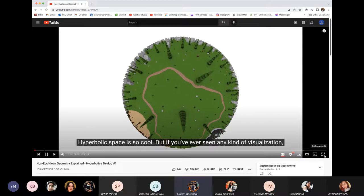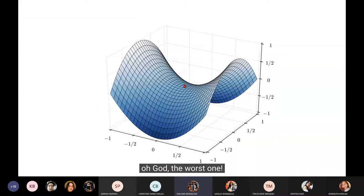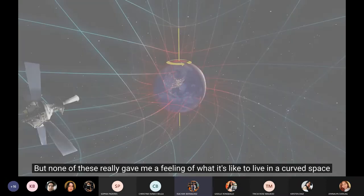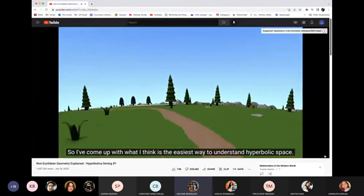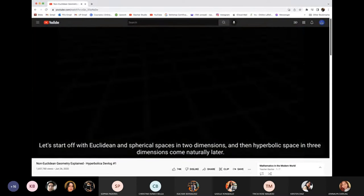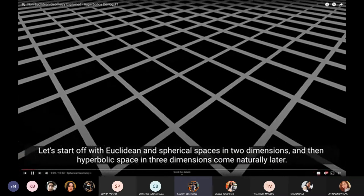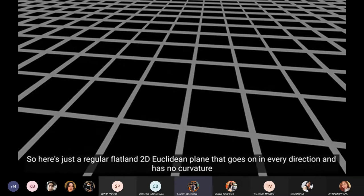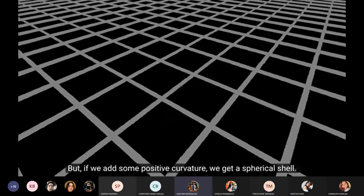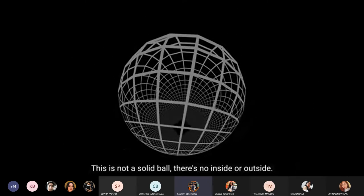Hyperbolic space is so cool. But if you've ever seen any kind of visualization, odds are it was this or this. Oh, God, the worst one. Please stop using this one. But none of these really gave me a feeling of what it's like to live in a curved space. And that was the real hyperbolic. Come up with what I think is the easiest way to understand hyperbolic space. Let's start off with Euclidean and spherical spaces in two dimensions, and then hyperbolic space in three dimensions come naturally later.